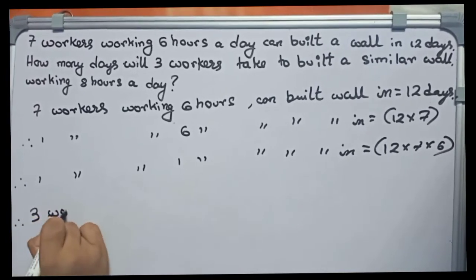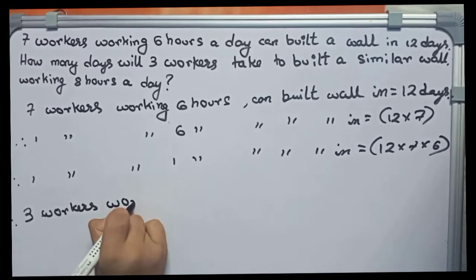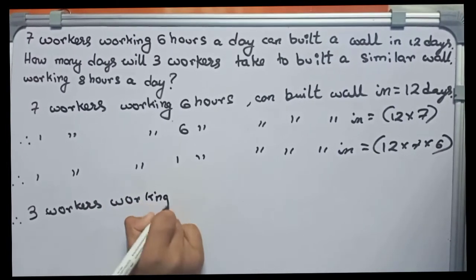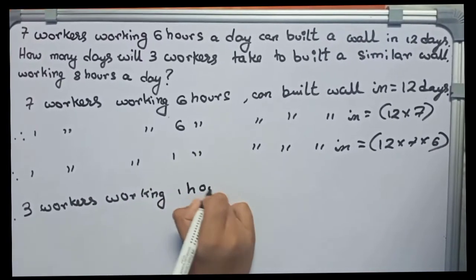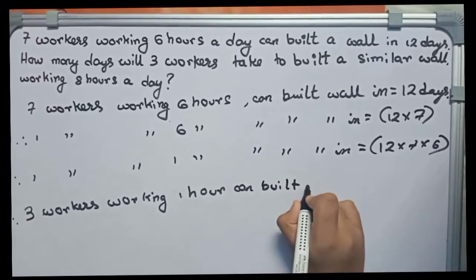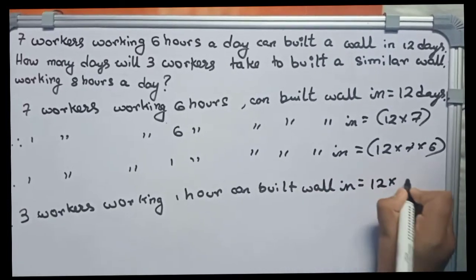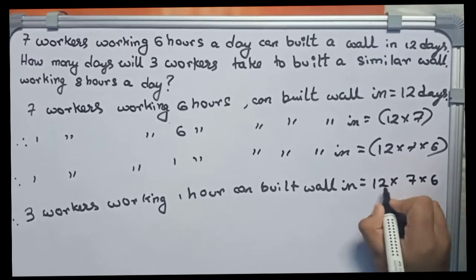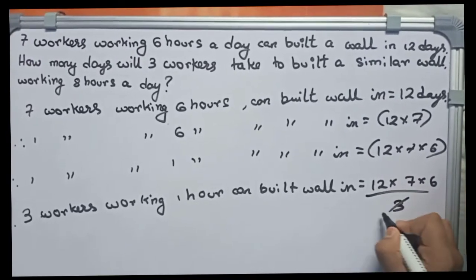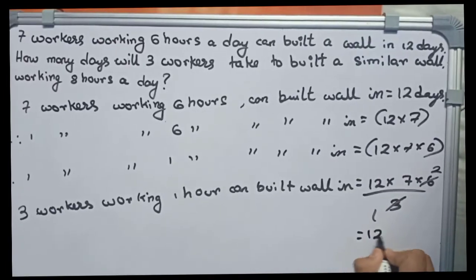Three workers working one hour can build wall in 12 into 7 into 6 by 3. We cut 3 and 6 to 12 into 7 into 2. We keep it like this only.